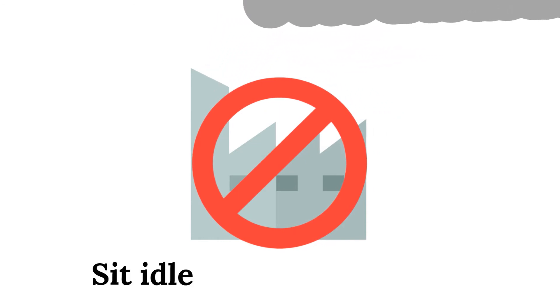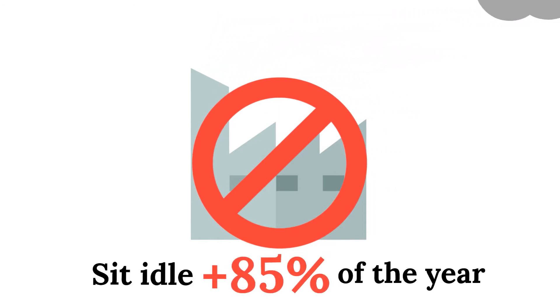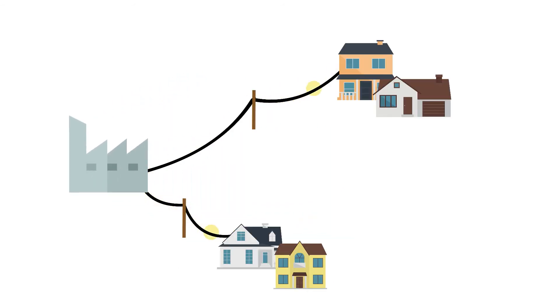Entergy's own data show the plant would sit idle more than 85% of the year. Entergy claims their plant will prevent power outages, but literally 100% of annual power outages in the city have been caused by problems with our power lines and poles, not a lack of generation.